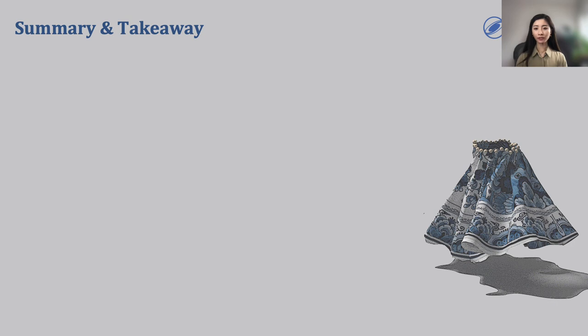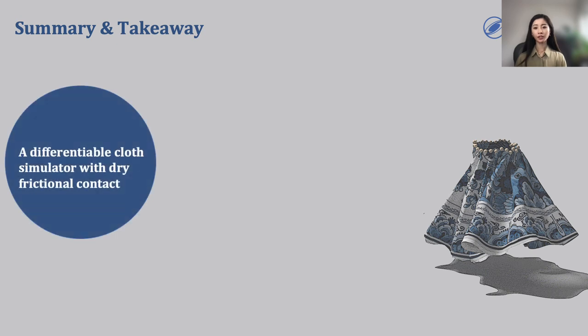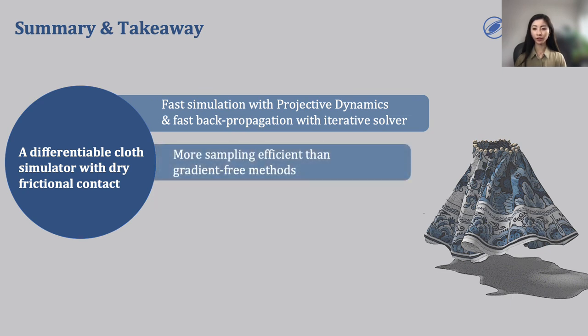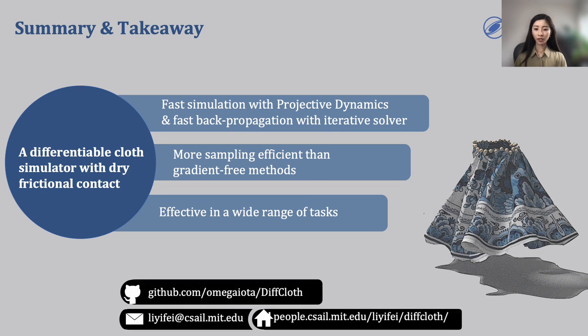To summarize, in this work, we present a differentiable cloth simulator that models dry frictional contact. DIFFCLOTH is very fast because it uses projective dynamics for its forward simulation and exploits the efficiency in forward simulation to speed up backpropagation of the gradients. We observe significantly more sampling efficiency to solve inverse tasks using our gradient-based method compared with gradient-free methods. The effectiveness of DIFFCLOTH is demonstrated in a wide range of inverse tasks. To learn more about our work, please check out our codebase and project webpage. And feel free to contact me if you have any questions. Thank you for listening.